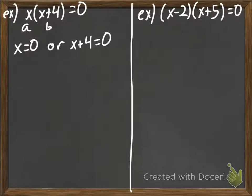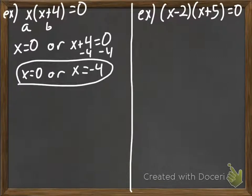So, the left side is already solved. That's nice. I have to solve the right side of the or, though. So, we subtract 4, and we get x equals negative 4. So, we know that x equals 0, or x equals negative 4.